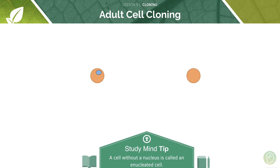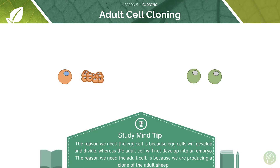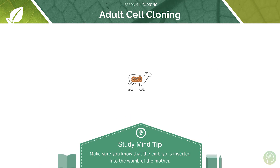Remember, a cell without a nucleus is called an enucleated cell, and we end up producing a clone of the adult sheep. The reason we need the egg cell is because egg cells have the ability to develop, divide, and form an embryo, whereas adult cells cannot do that. We need the adult skin cell because we are producing a clone of that adult — we take the skin cell from the sheep we want to clone, but use the egg as an empty shell to allow embryo development, since the egg has been enucleated. Make sure you know that the embryo is inserted into the womb of the mother.